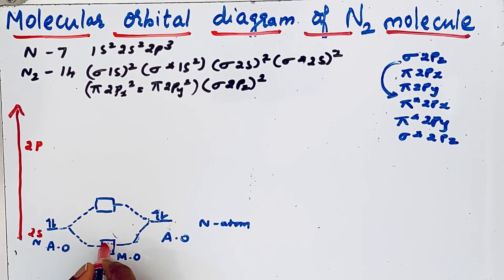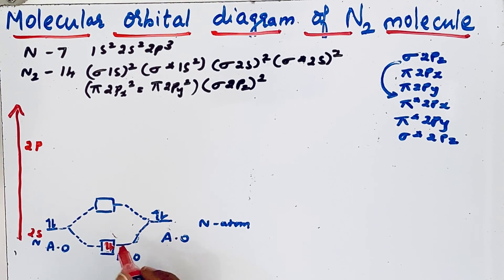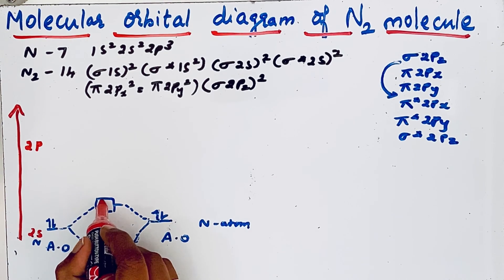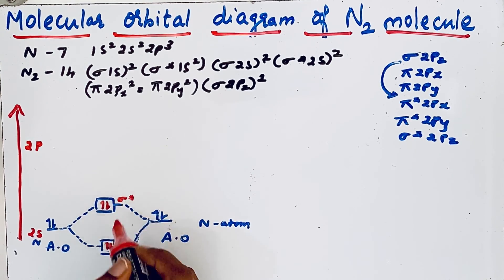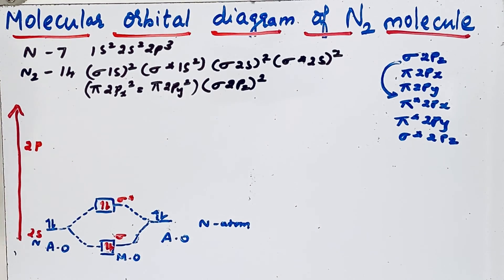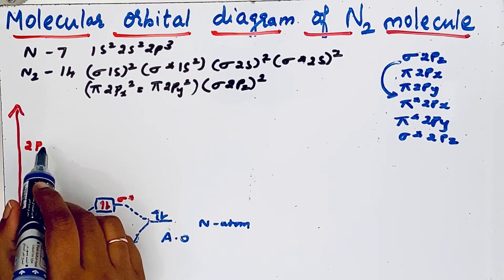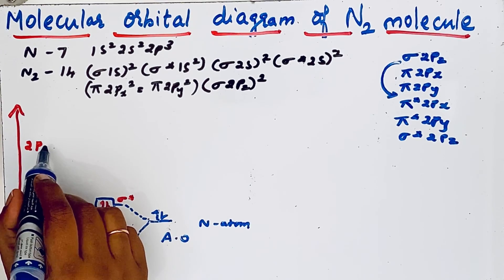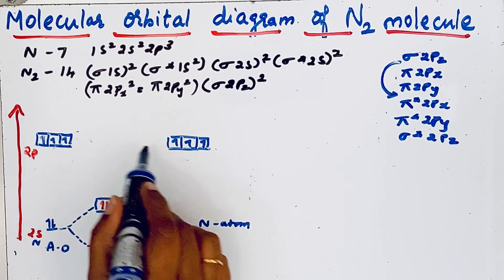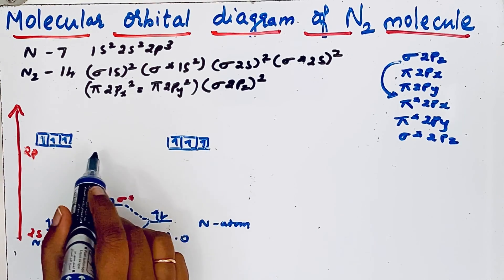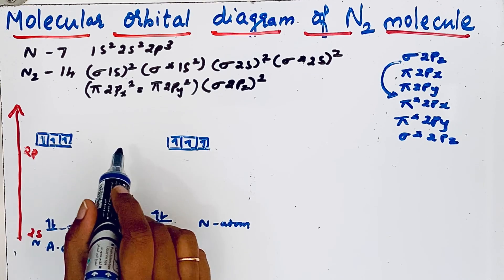The first electrons enter into the low-energy bonding molecular orbital, then after that they go to the high-energy anti-bonding molecular orbital. This is the sigma bonding molecular orbital and this is the sigma* anti-bonding molecular orbital. Similarly for the 2p orbitals, nitrogen has three electrons; when two 2p orbitals combine there is the possibility of bonding and anti-bonding molecular orbitals.